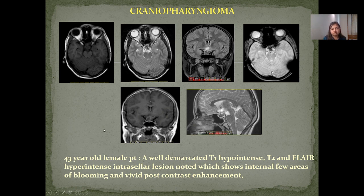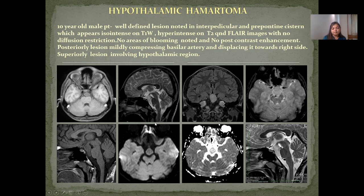Case 5 — Craniopharyngioma: 43-year-old female patient with a well-demarcated T1-hypointense, T2 and FLAIR hyperintense intrasellar lesion showing internal areas of blooming and vivid post-contrast enhancement. Case 6 — Craniopharyngioma with Hypothalamic involvement: 10-year-old male patient with a well-defined lesion in the interpeduncular and prepontine cistern, iso-intense on T1, hyperintense on T2/FLAIR, no diffusion restriction, no blooming, no post-contrast enhancement. Posteriorly the lesion compresses the basilar artery, displacing it to the right; superiorly it involves the hypothalamic area.